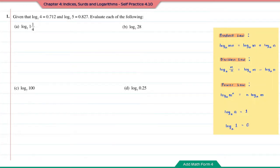Practice 4.10, question number 1. Given that log base 7 of 4 is equal to 0.712 and log base 7 of 5 is equal to 0.827, evaluate each of the following.